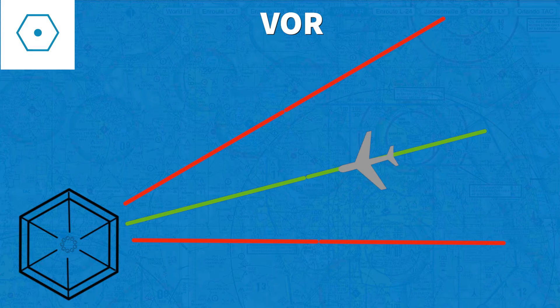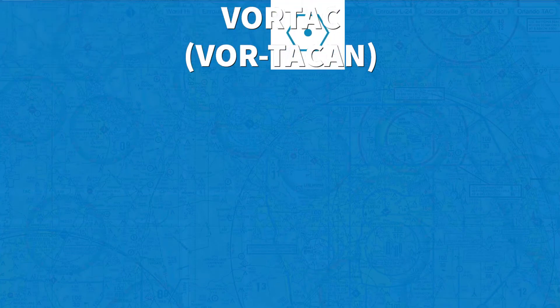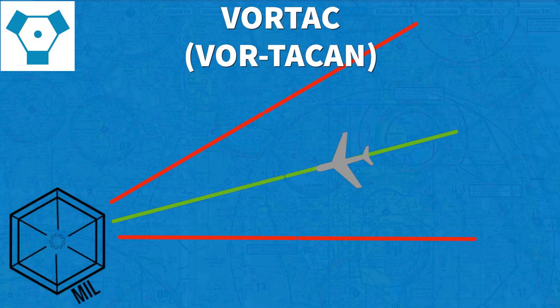The second symbol is the VORTAC symbol. It consists of the VOR symbol plus three tick marks on the edges. This type of radio navigation aid works just like a VOR but it includes a TACAN, which is a military aid.